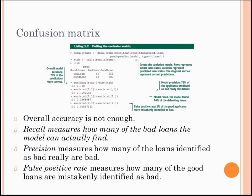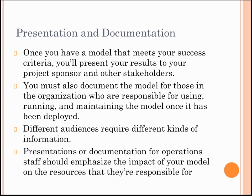Overall accuracy is not enough, so we have other measurements: recall measures, precision measures, and false positive rate. Recall is how many of the bad loans the model can actually find. Precision measures how many of the loans identified as bad really are bad. False positive rate measures how many of the good loans are mistakenly identified as bad.